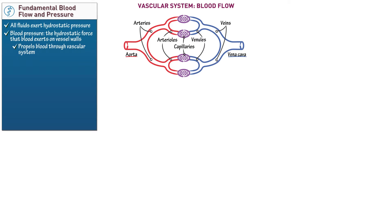The heart rhythmically pumps blood through this closed network of vessels, which facilitates the continuous delivery of blood to all the body's tissues. Each level of the vascular system experiences a variable degree of pressure, so now let's illustrate the relative blood pressures in the peripheral vessels.